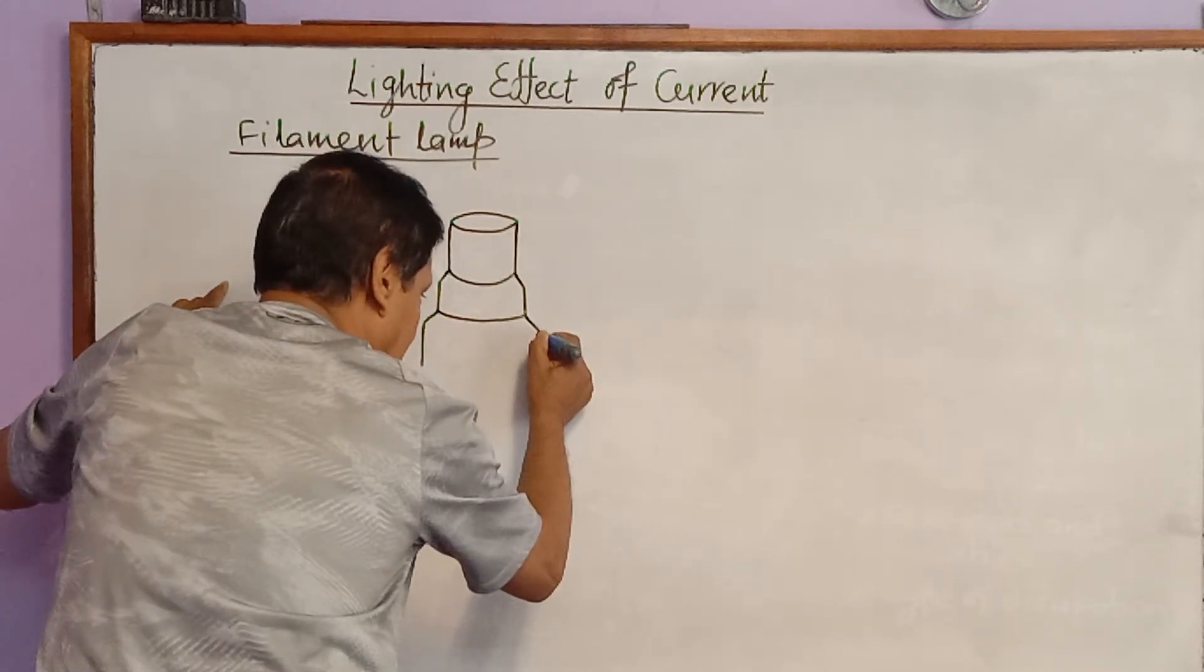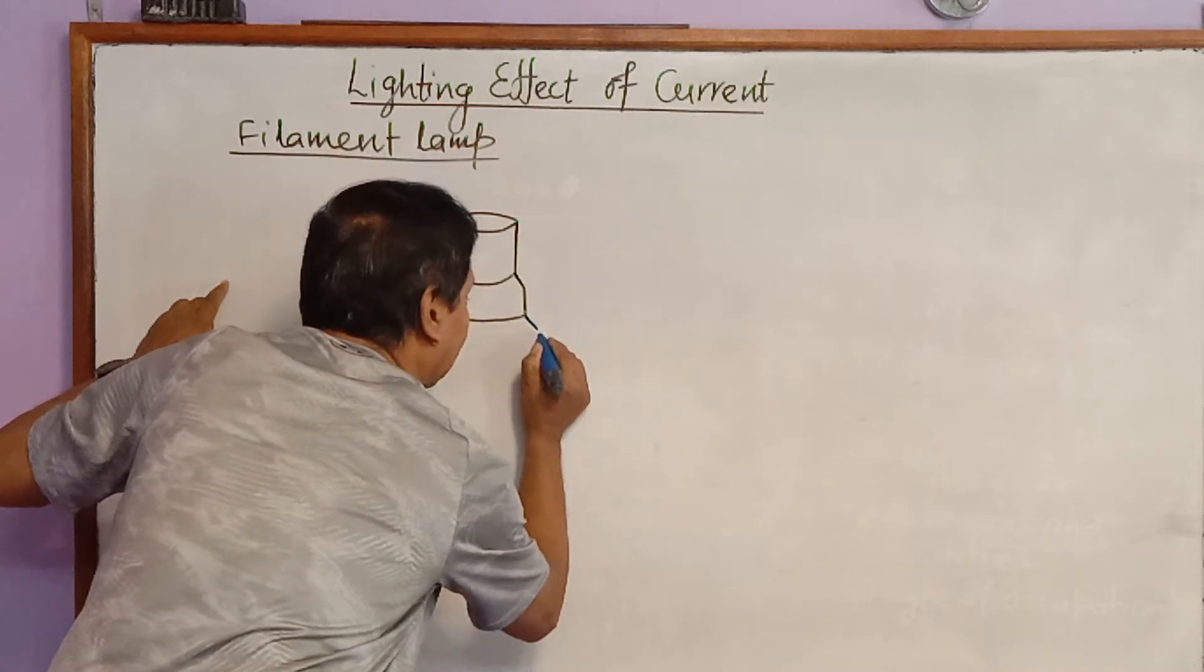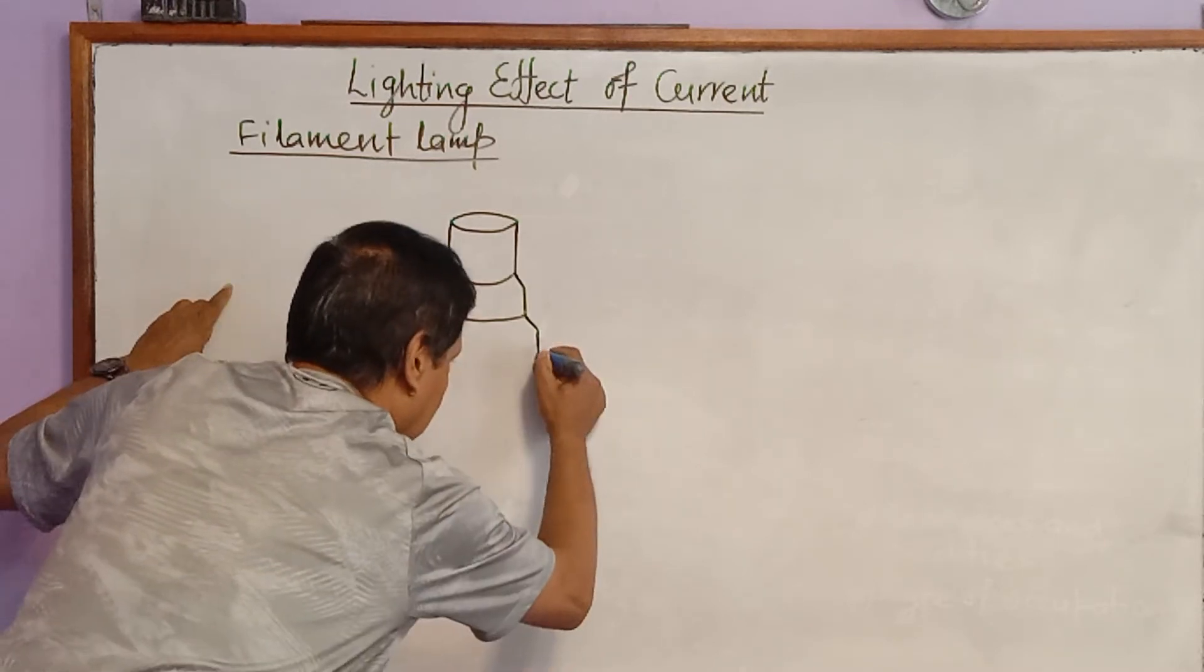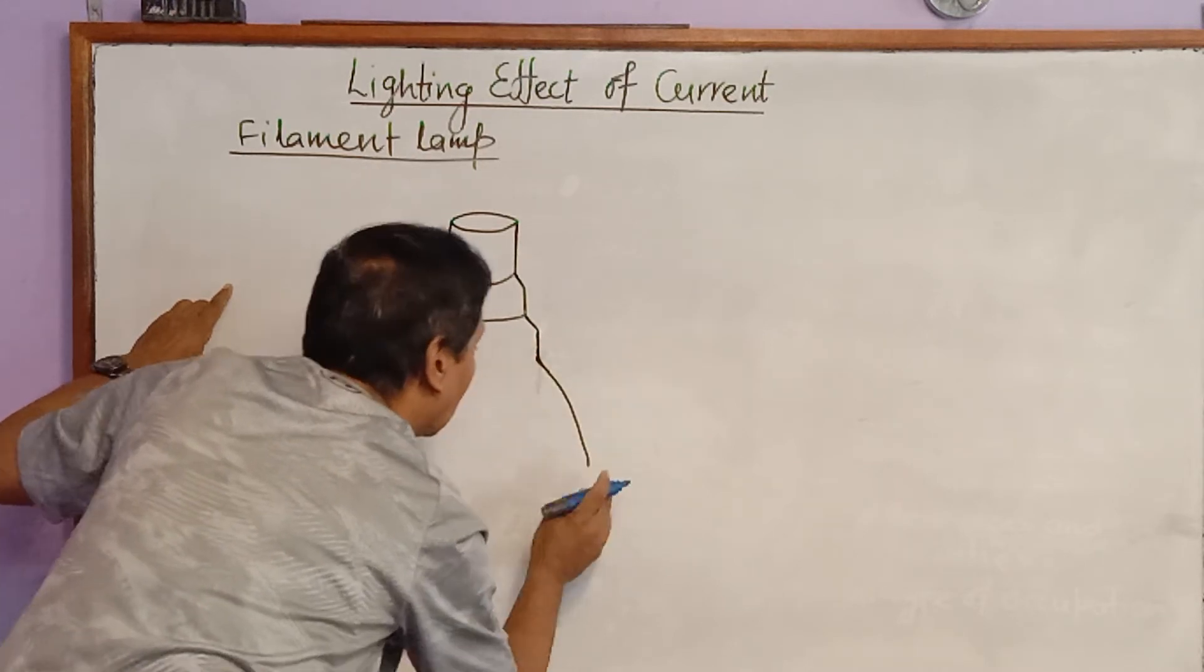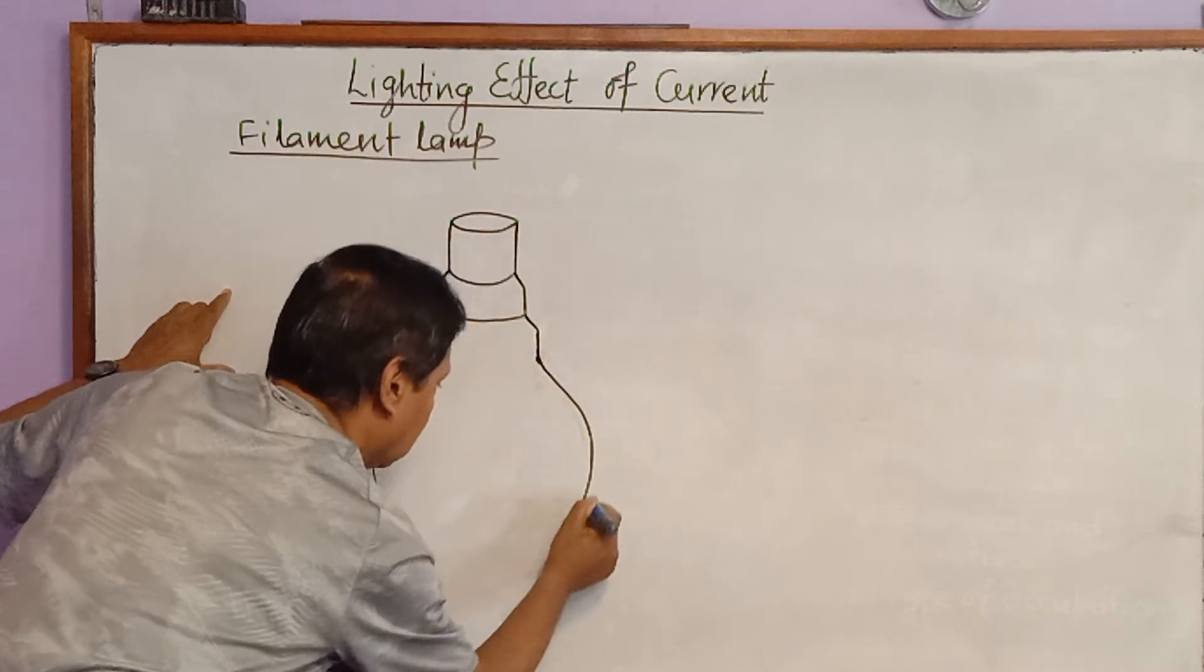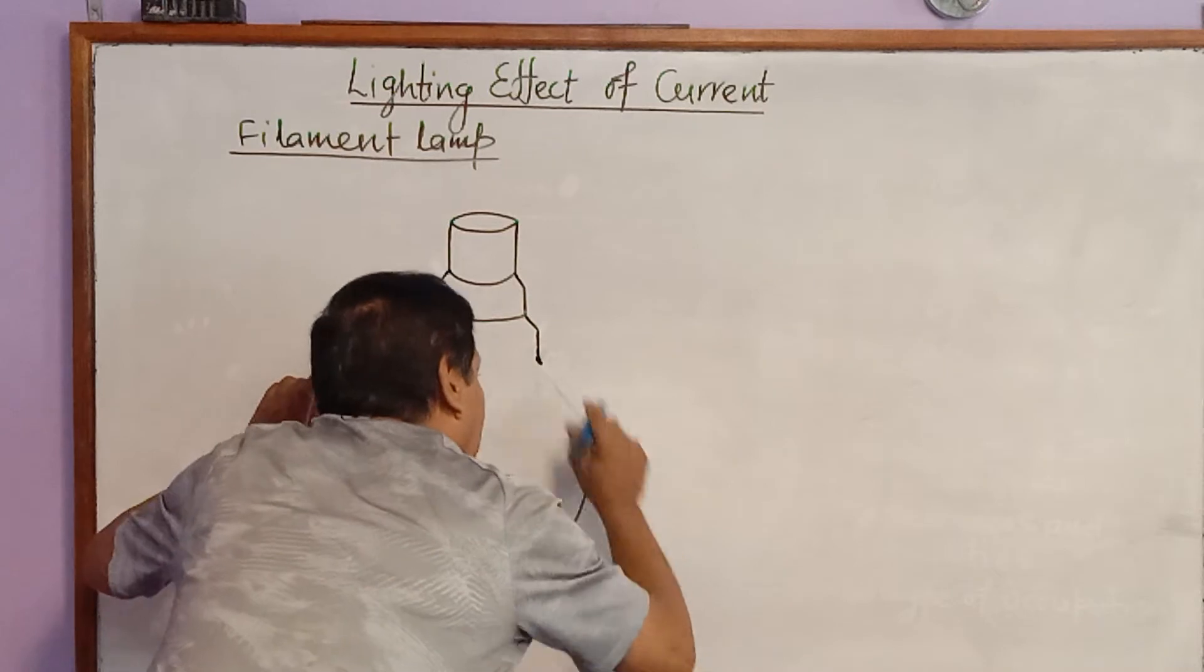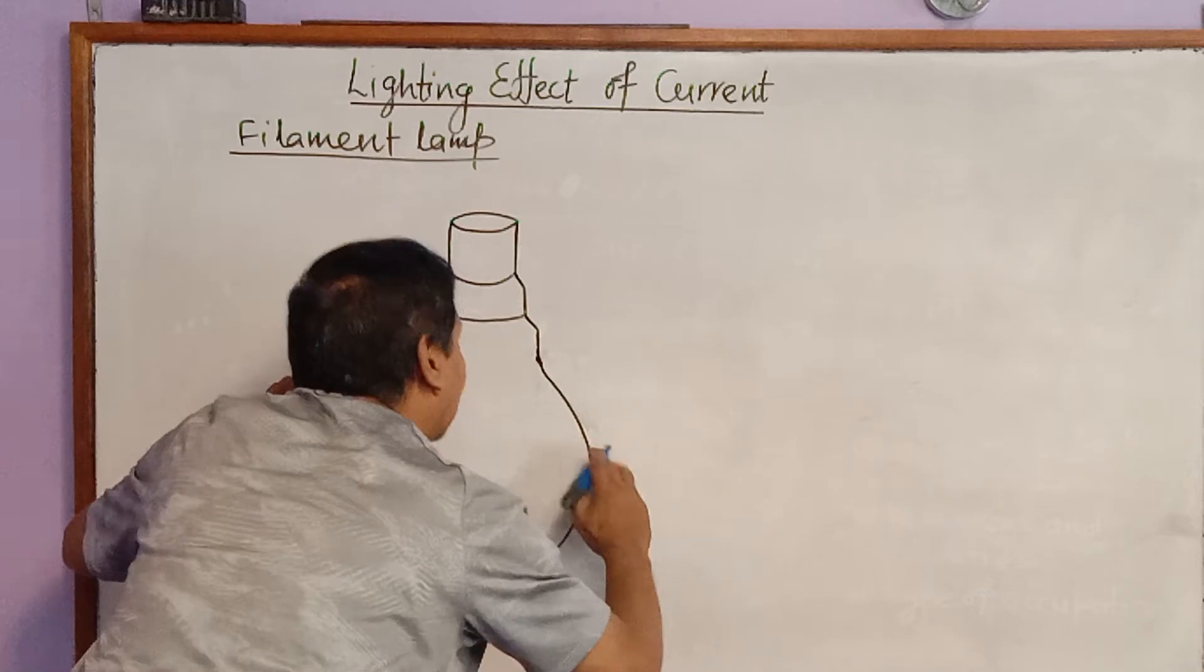And this part, the lower side of this filament lamp is made up of glass. This way we can make filament lamp. The upper part is metallic and lower side is made up of glass.